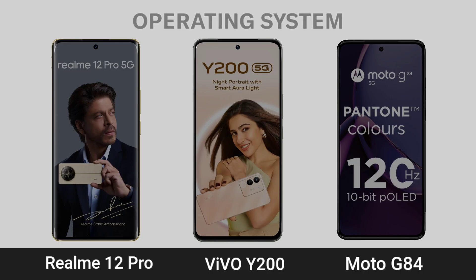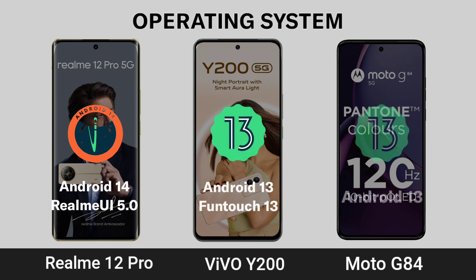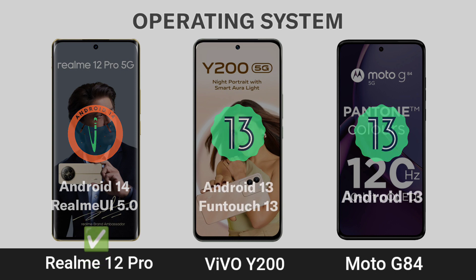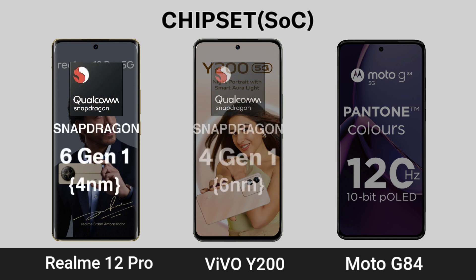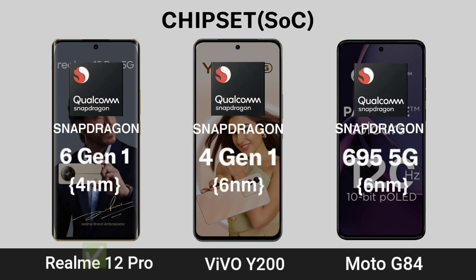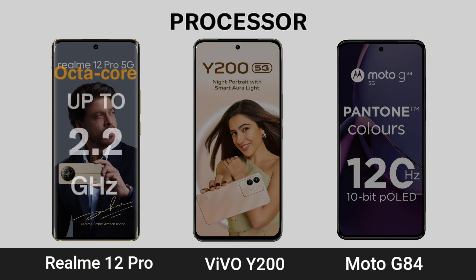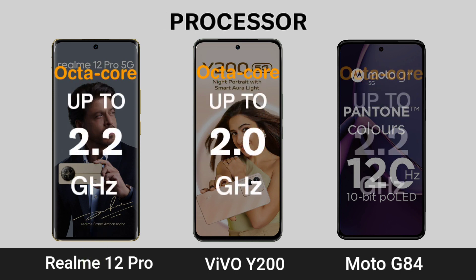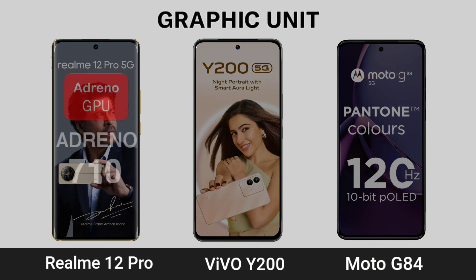Moving on to performance — the operating system, chipset, and processor used in each phone, followed by the graphic unit or GPU comparison.